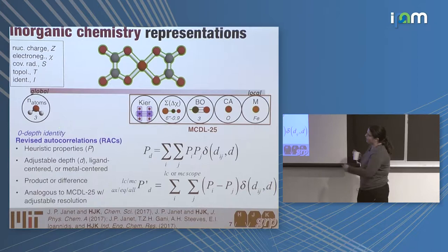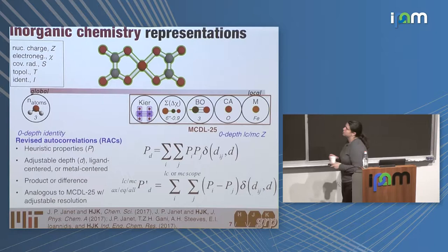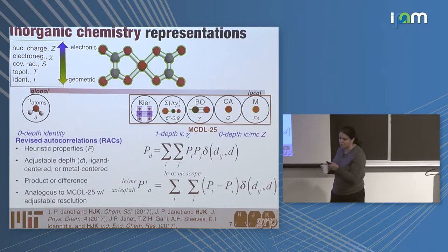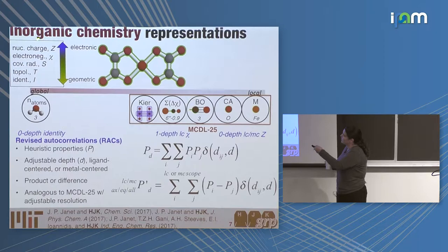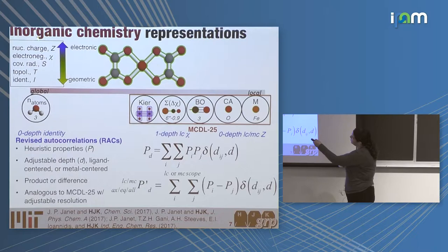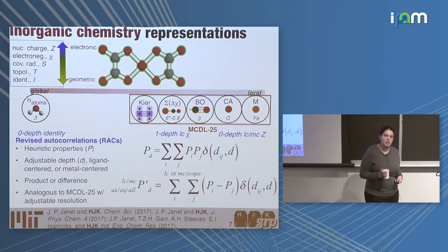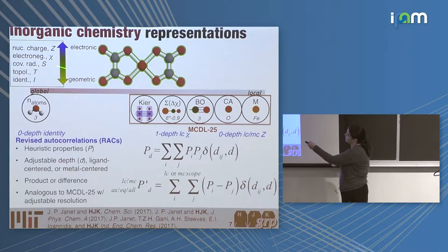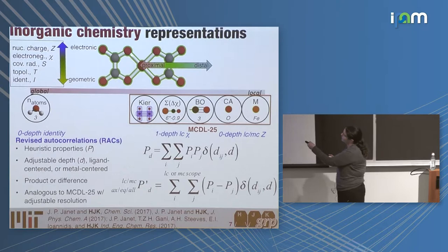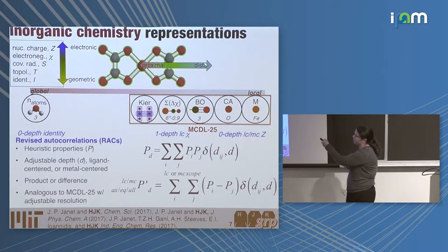Doing this, you end up with features that span from local to global based on how you cut off the depth. The number of atoms in a system is just the zero-depth identity in a RAC. These local descriptors are the zero-depth, ligand-centered and metal-centered Z. In terms of interpretability — which is in the title of this workshop — we've actually found using this to be extremely important and valuable for aiding interpretation of datasets and ML models. For the rest of this talk, I'll color Z and chi as electronic features, and more geometric ones as topology or identity. If information distant from the metal is in a selected feature, I'll call it distal; if only metal-centered, proximal.